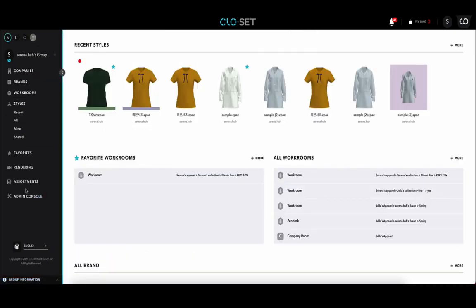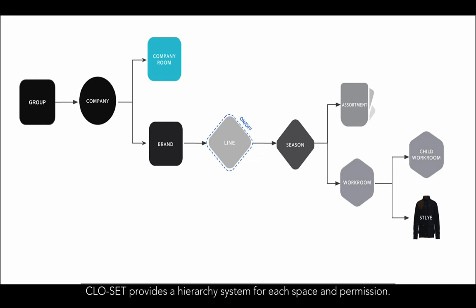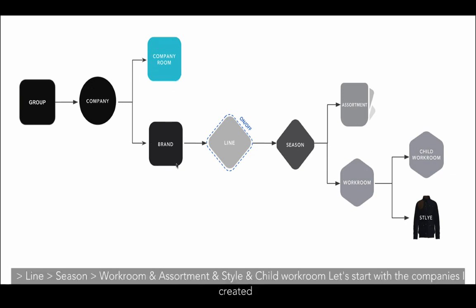Coming back to the main dashboard of Closet. Closet provides a hierarchy system for each space and permission. There is a group, which is the highest level in Closet. Under the group, there is company. Under the company, there are brand and company room. In the brand, there are line and season, and each brand can create workroom and assortment.